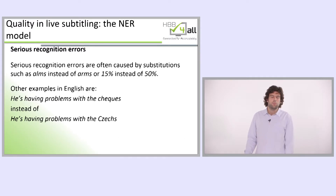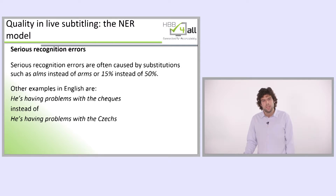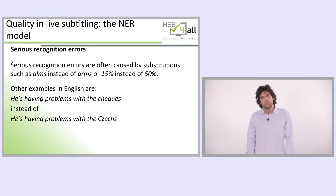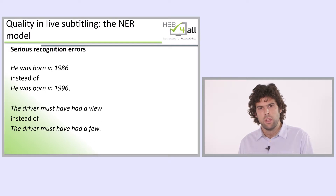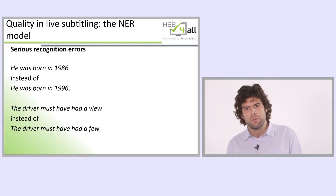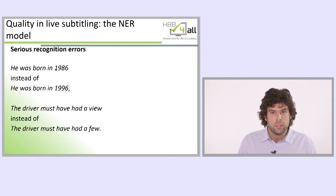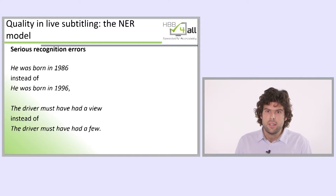Serious recognition errors are often caused by substitutions, such as 'arms' instead of 'arms', or '15%' instead of '50%'. For example, 'he's having problems with the text' could be subtitled as 'he's having problem with the text', referring to a nationality. They both make sense, but give contradictory information. Critically, there is no way a deaf viewer with no access to the sound would necessarily be able to tell that this is an error. Further examples: 'he was born in 1986' instead of '1996', or 'the driver must have had a view' in place of a different phrase.